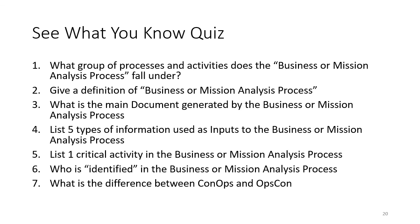This is the opportunity to take a step back and see what you know about everything you've learned about the business or mission analysis process and activities. There are seven main items identified: What group of processes does business or mission analysis fall under? Give a definition of the process. What is the main document generated? List five types of inputs. List one critical activity performed within the process. Who is identified in the process? And what is the difference between CONOPS and OPSCON? Pause the video and see if you can answer those questions.